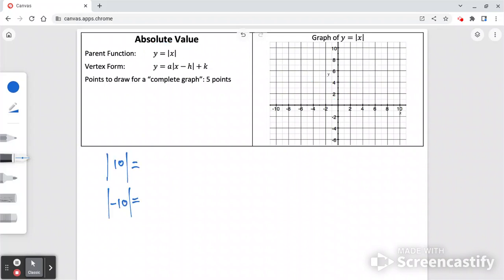Please make sure you remember what absolute value does. If I say, what's the absolute value of 10? The answer is 10. What's the absolute value of negative 10? It's also 10. It just takes any number inside those straight brackets and makes it positive.